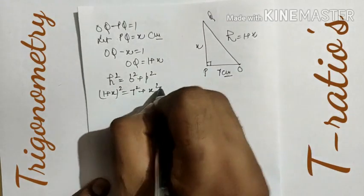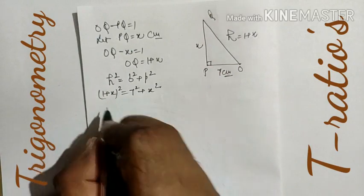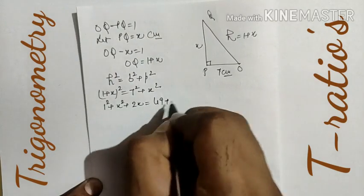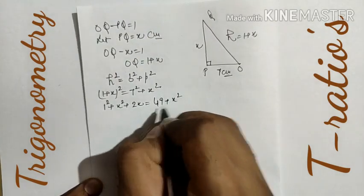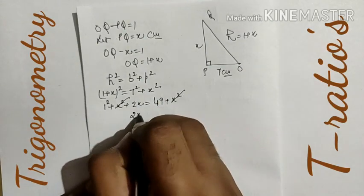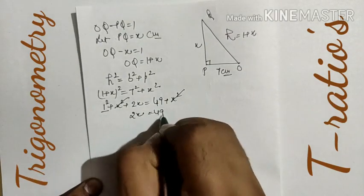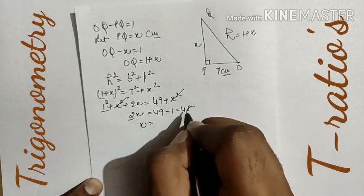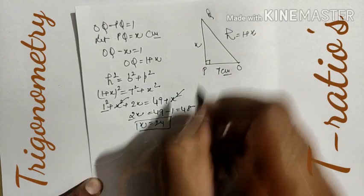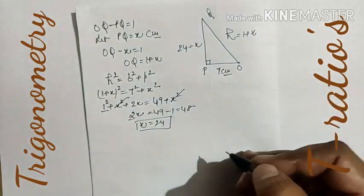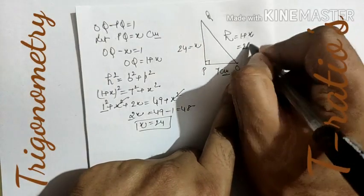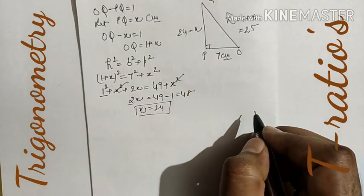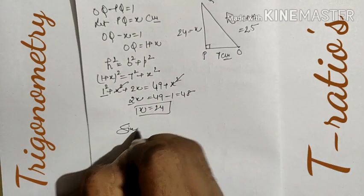By Pythagoras theorem: (1 + X)² = 7² + X². Expanding: 1 + 2X + X² = 49 + X². The X² terms cancel on both sides, giving 1 + 2X = 49. So 2X = 48, which gives X = 24. Therefore PQ = 24 cm and OQ = 1 + 24 = 25 cm. Now we have all three sides: OP = 7, PQ = 24, OQ = 25.